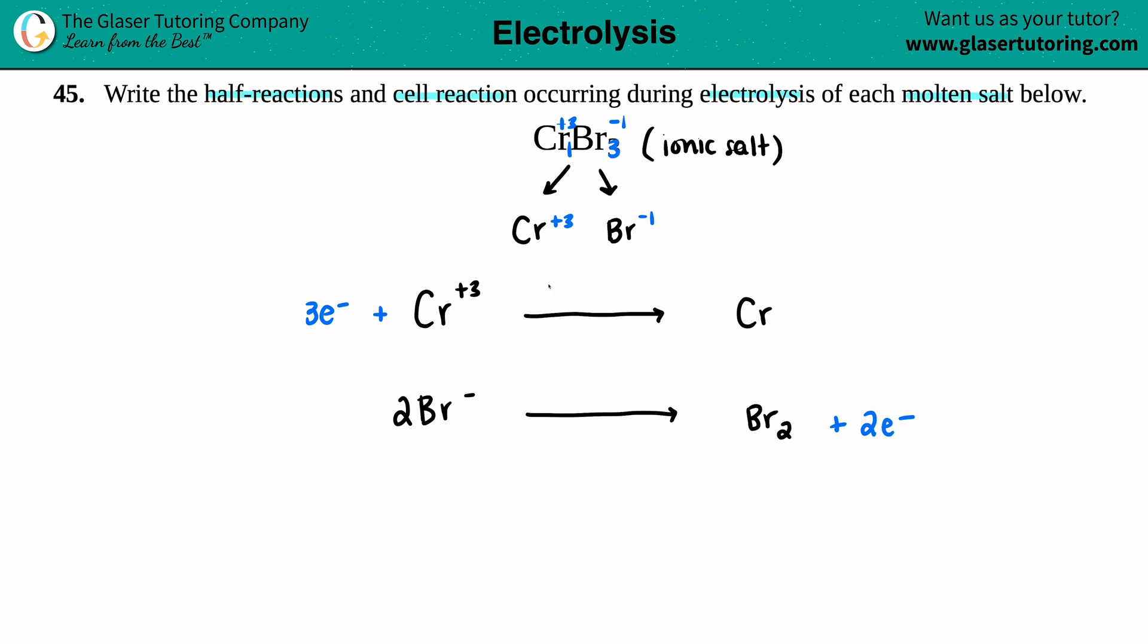If we wanted to figure out which one was the anode or the cathode, remember the cathode is always the one that's gaining electrons, and that is shown by having electrons on the left side. So this is the cathode—that's your reduction. Since you have electrons on the product side, that means losing, so that would be your anode.